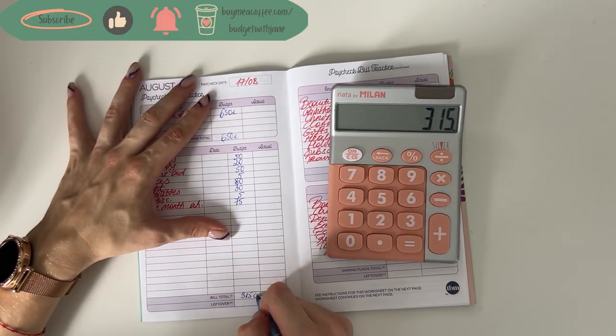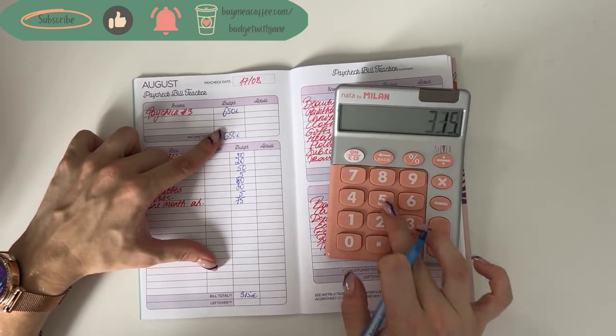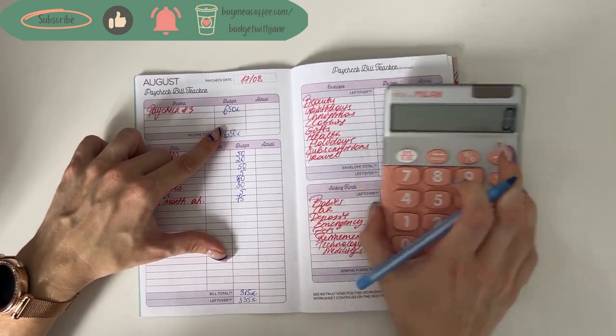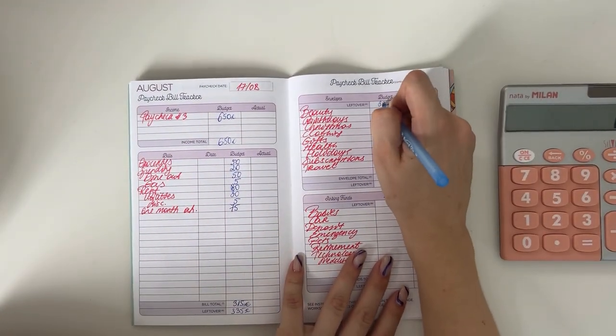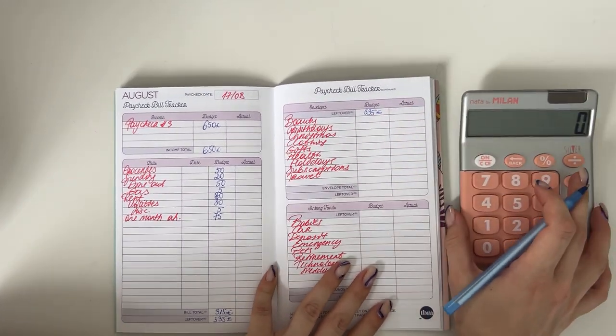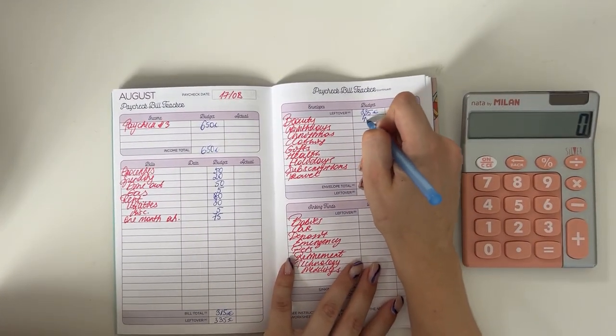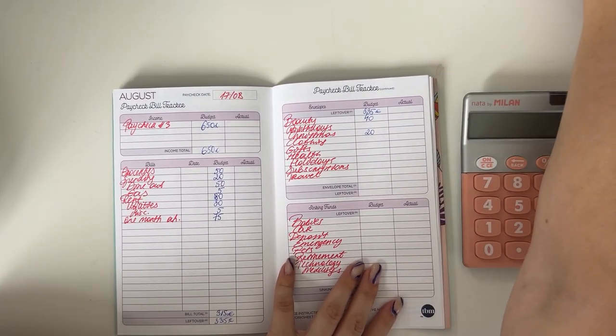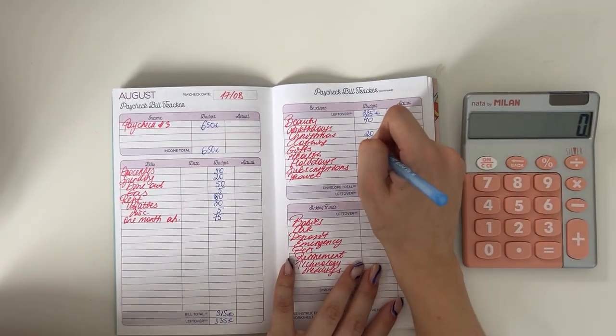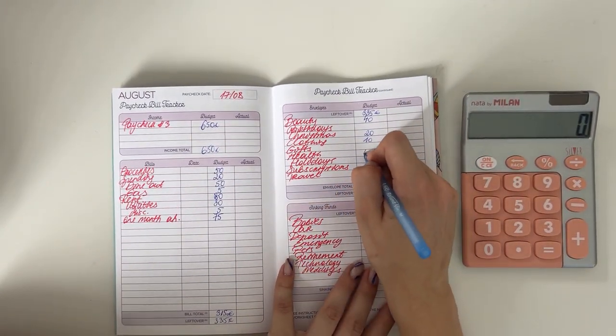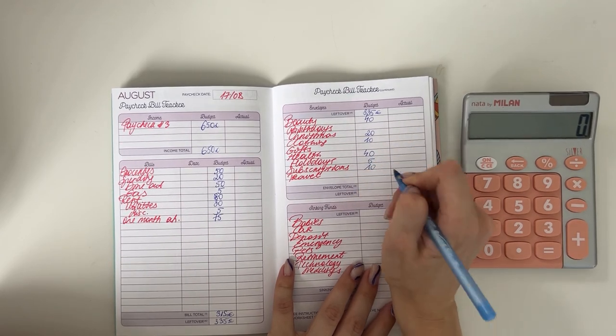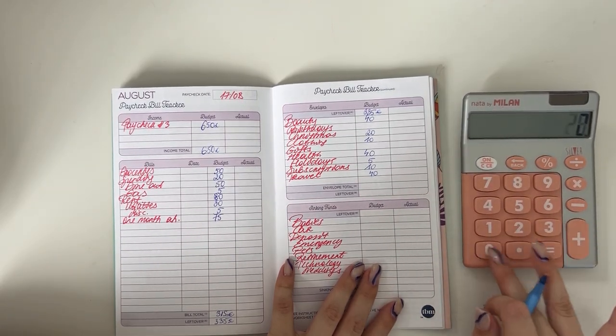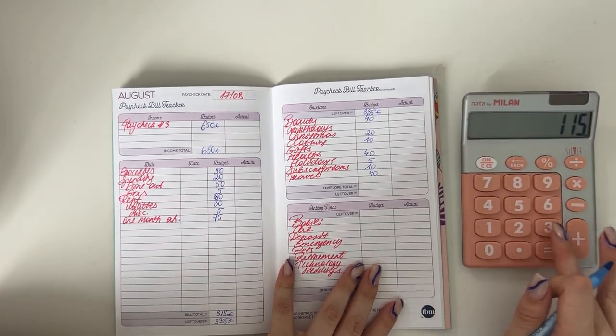So for bills and cash envelopes, we are adding €315 in total. €650 minus €315 is €335. We're bringing that €335 to short-term sinking funds. We're going to put €40 into beauty, €20 into Christmas - we're not stopping birthdays anymore this year because they're fully funded - €10 into clothing, €40 into health, €5 in holidays, €10 in subscriptions, and €40 into travel. For short-term sinking funds in total, that's €165.